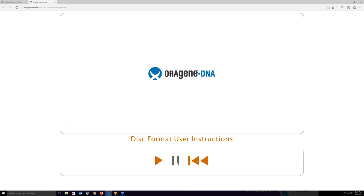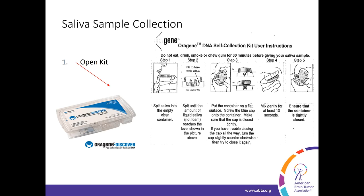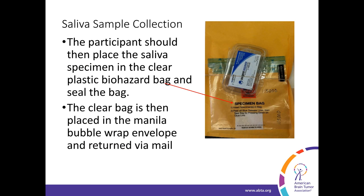Once your saliva reaches the fill line, place the kit on a flat surface and tightly close the container using the cap. The solution stabilizes and protects your saliva samples until it is analyzed at the lab. Mix your sample with preserving solution by inverting the kit several times. Written instructions are also included in the kit when it is sent to you. Once collected, place the specimen into the specimen bag with the sticky seal at the top, and put the clear bag in the manila bubble wrap envelope and return it via mail — postage paid within the United States.